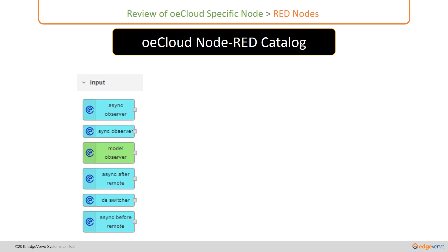Some of the popular input nodes include Async Observer, Sync Observer, Model Observer, Async After Remote, DS Switcher which is the data source switcher, and Async Before Remote.